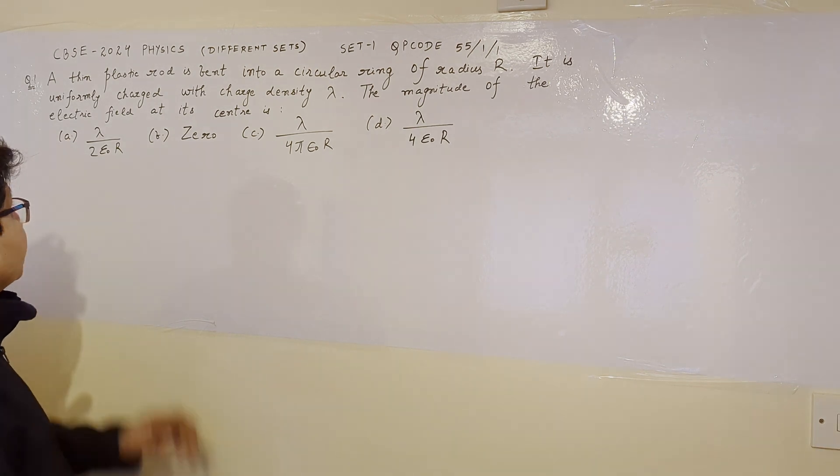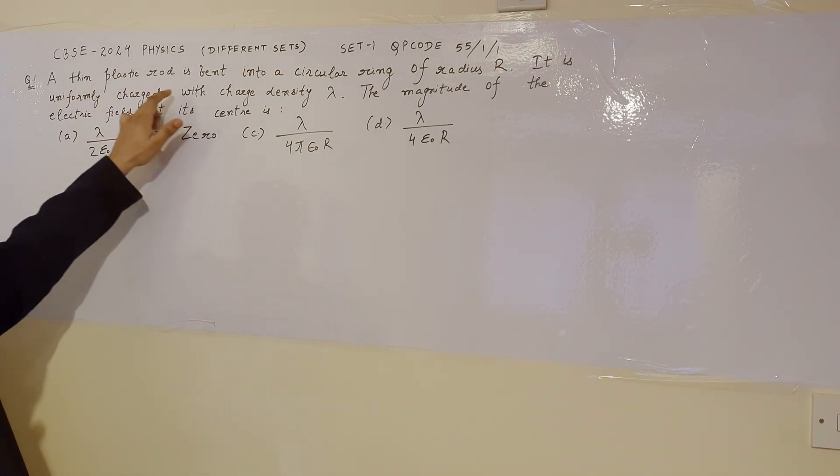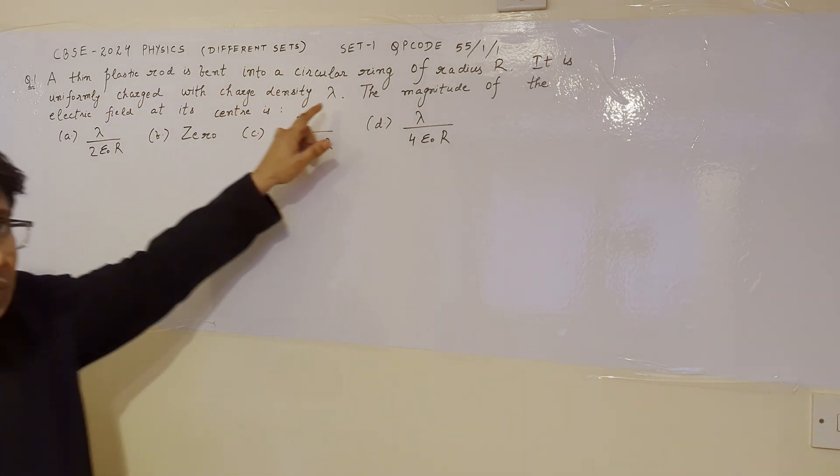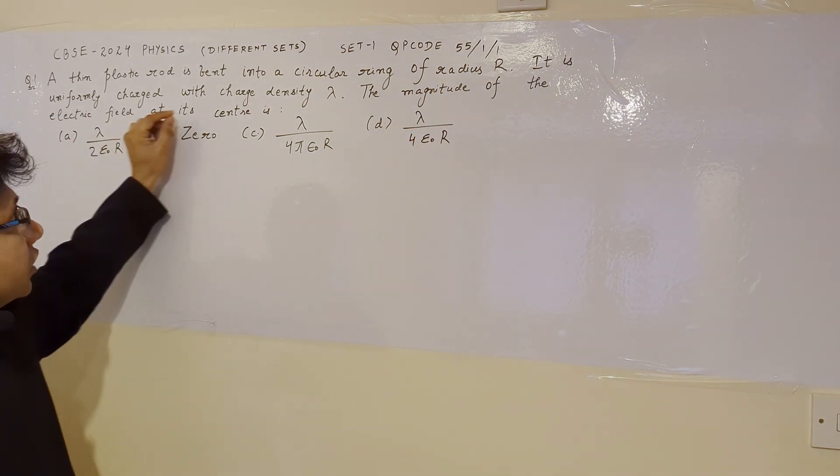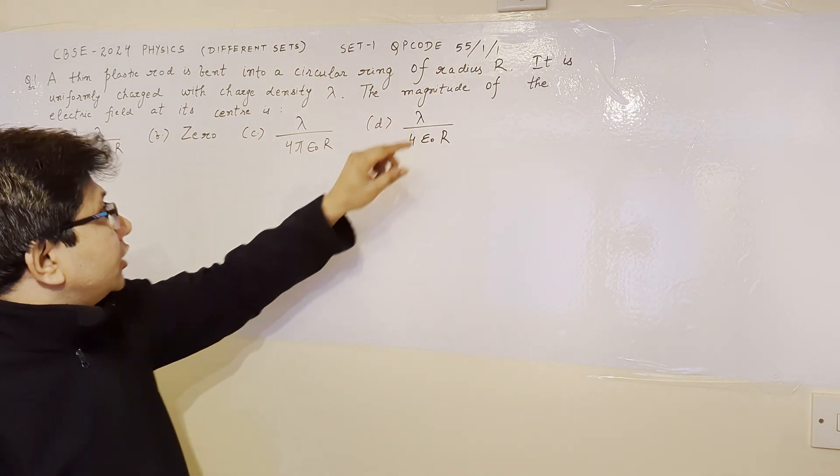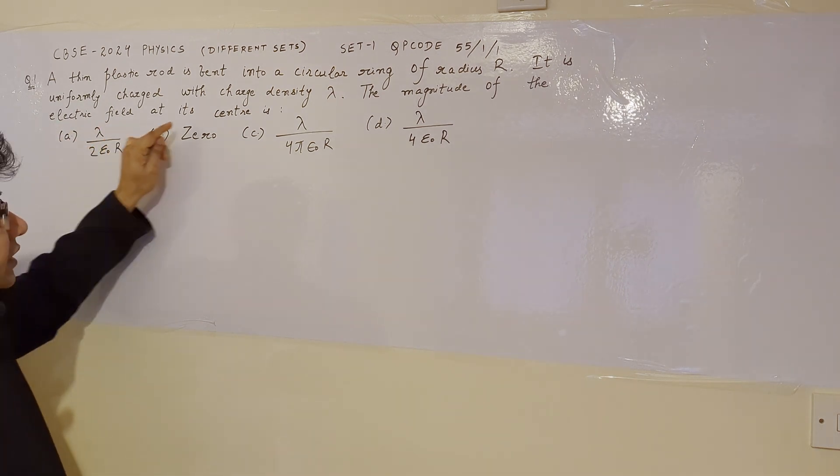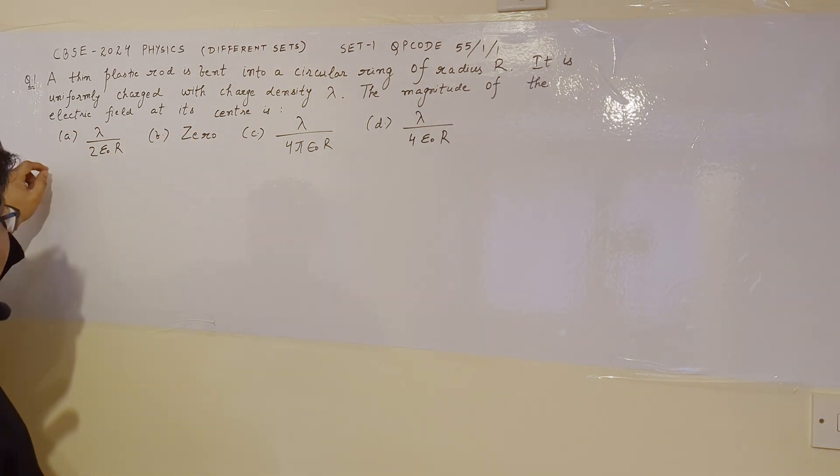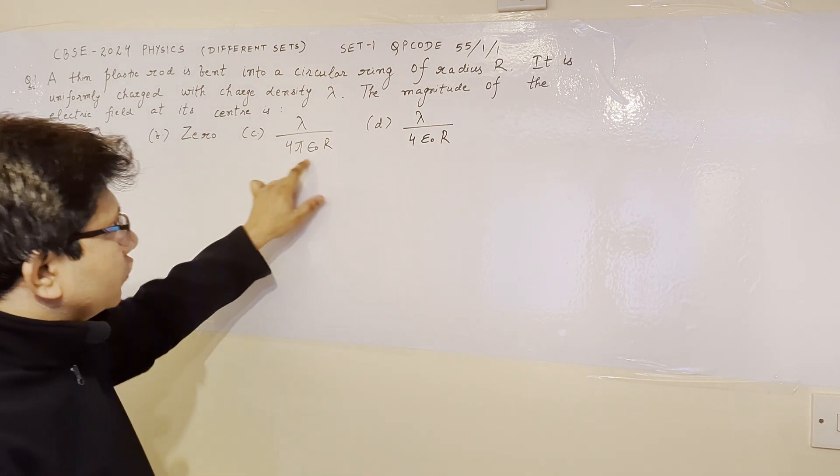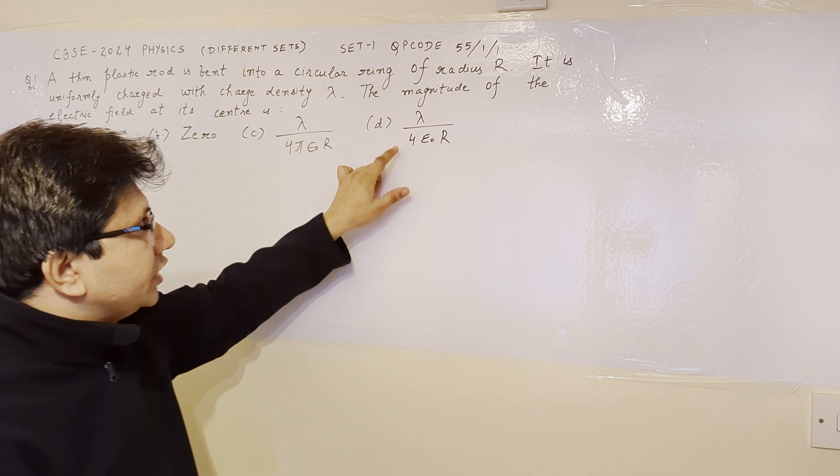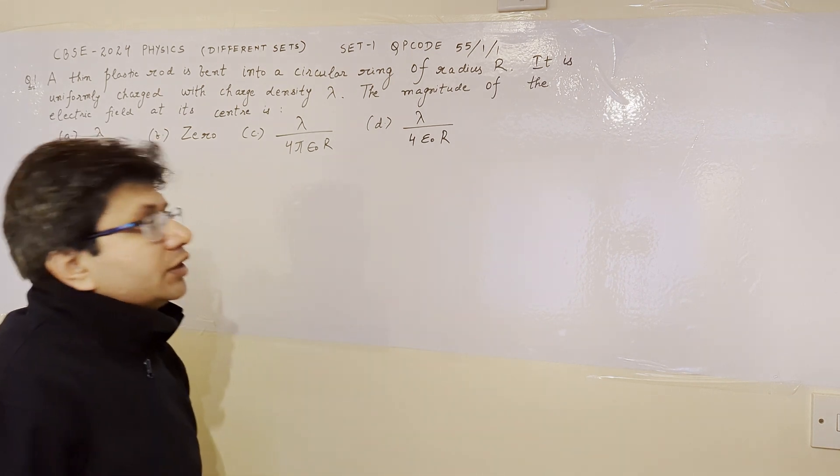Now I am going to read the question. A thin plastic rod is bent into a circular ring of radius r. It is uniformly charged with the charge density lambda. The magnitude of the electric field at its center is, and the given options are: option a, lambda upon 2 epsilon naught r; option b, 0; option c, lambda upon 4 epsilon naught r; and option d, lambda upon epsilon naught r.